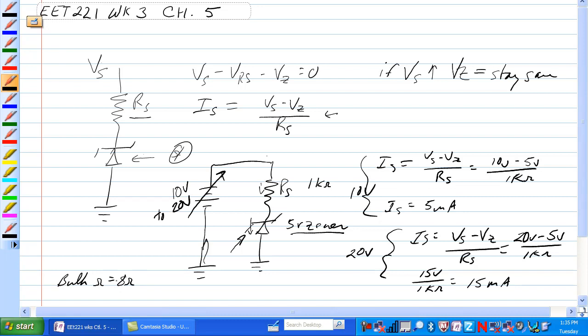Then the difference in current from here to here is 10 milliamps, and 10 milliamps times 8 Ohms is, oh, it's 80 millivolts, should have guessed that one.